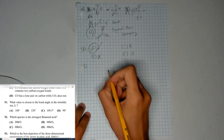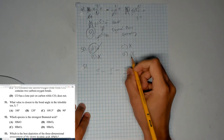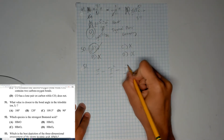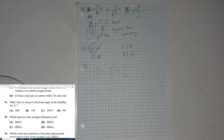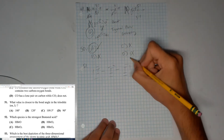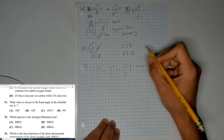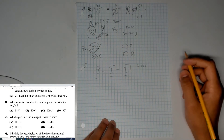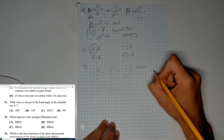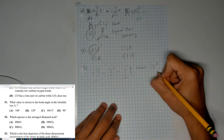Moving on to question 51, another easy one. If you memorize VSEPR rules, this is linear — two bonding pairs and three lone pairs — giving you a linear geometry. The bond angle is 180 degrees, and the answer is A.